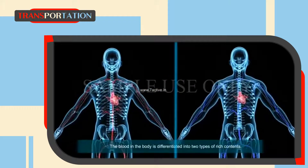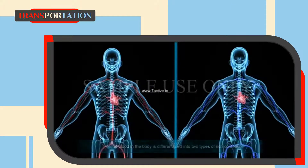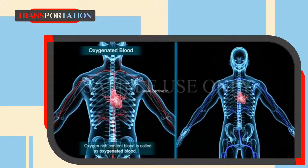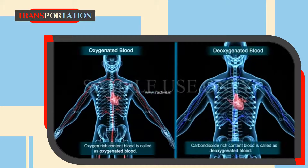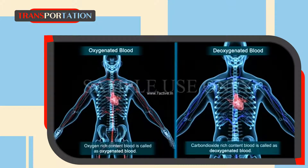The blood in the body is differentiated into two types based on rich content. Oxygen-rich blood is called oxygenated blood. Carbon dioxide-rich blood is called deoxygenated blood.